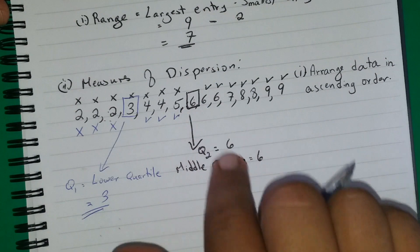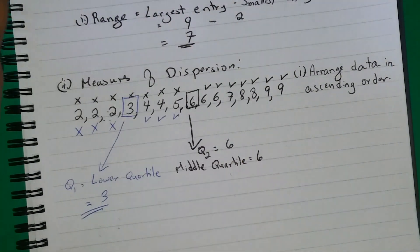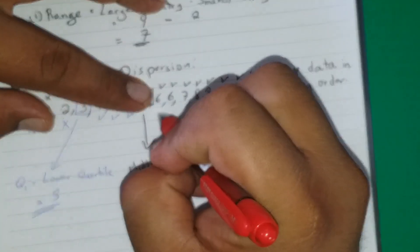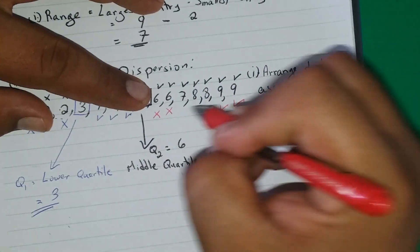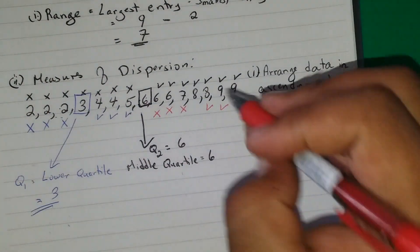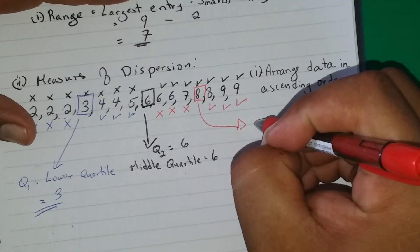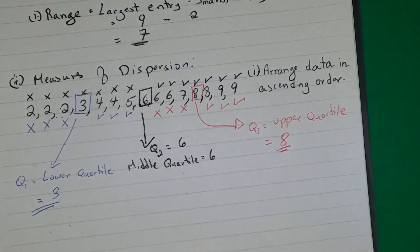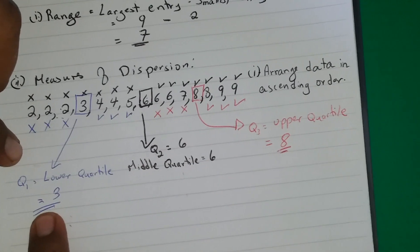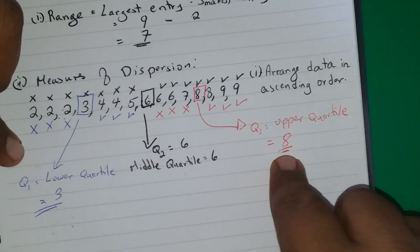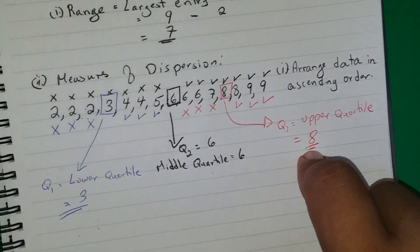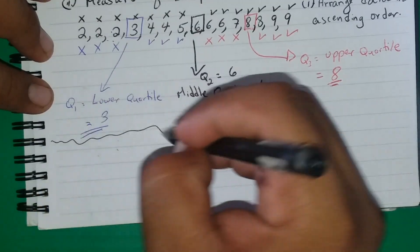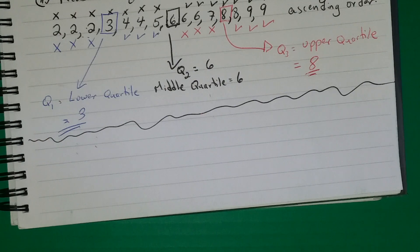So the lower quartile is 3 and the middle quartile is 6. Now for the upper quartile, Q3, we apply the same one-in, one-out method to the upper half of the data. Working through the upper half, Q3, the upper quartile, equals 8. So our results are: Q1 = 3, Q2 = 6, Q3 = 8.